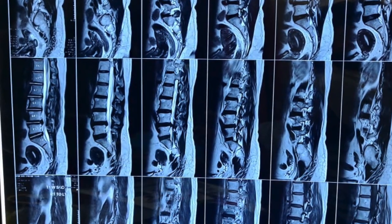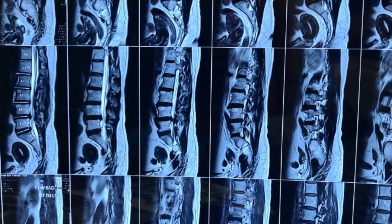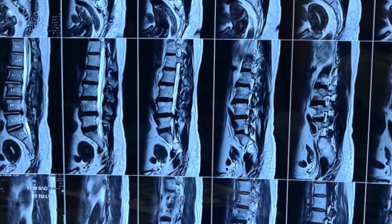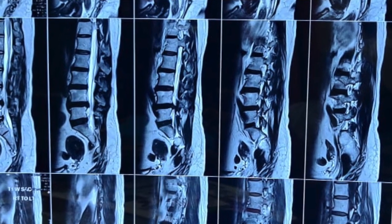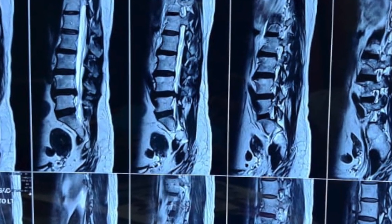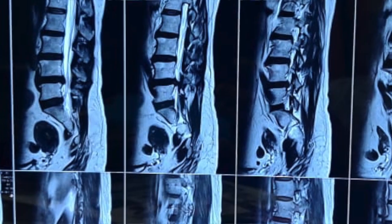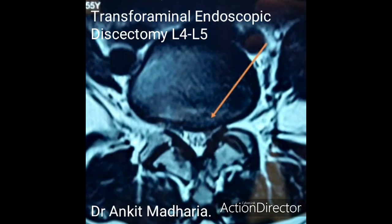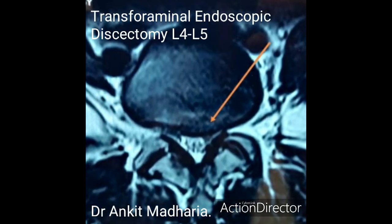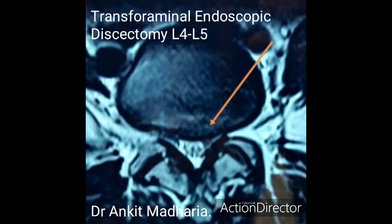As you can see here, we have an MRI picture of a 55-year-old female patient who had complaints of left lower limb radicular pain since nine months. MRI shows a left-sided disc at L4-L5 level which is compressing on the traversing nerve root.